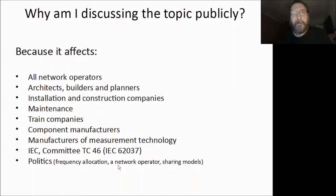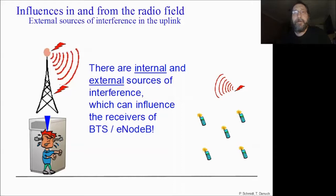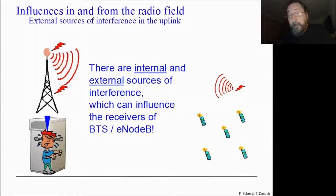PIM is an RF interference in the uplink. There are several sources which can cause interference in the uplink. First we have internal sources — that is the topic of this PIM video today — and also external sources can cause uplink interference. We are looking at the uplink of the eNodeB, which has a receiver with very high sensitivity. The receiver has to receive the very weak signals of the mobiles.